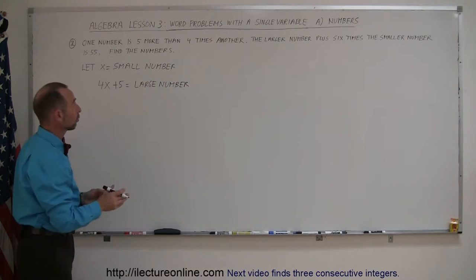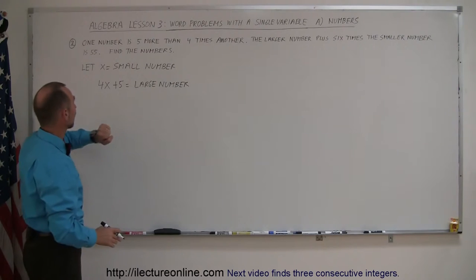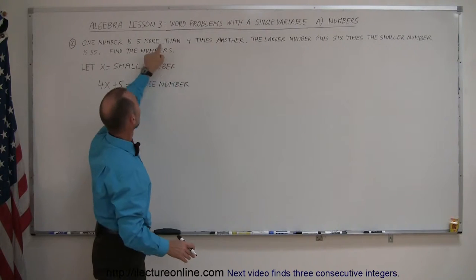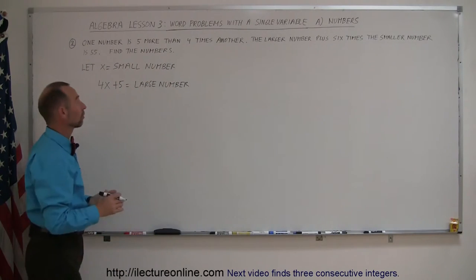Okay, so let x equal the small number. That's the other number they're talking about. And then the large number is four times the small number plus five more. That's 4x + 5.